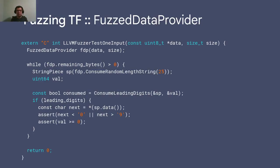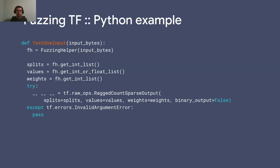For the FuzzedDataProvider, we initialize it with the data buffer and its size, then as long as we have bytes remaining we read components, call our API — in each case consuming leading digits — and check some property on the output. We can also use FuzzedDataProvider in Python, hidden under a fuzzing helper class, because most TensorFlow APIs receive an integer list, float list, or list of tensors. This has been put into the fuzzing helper so users write as little code as possible to fuzz a specific operation.